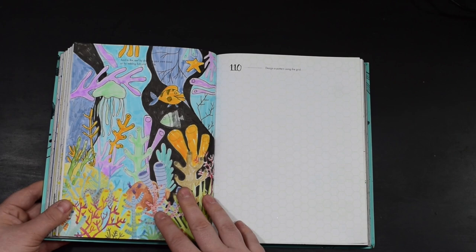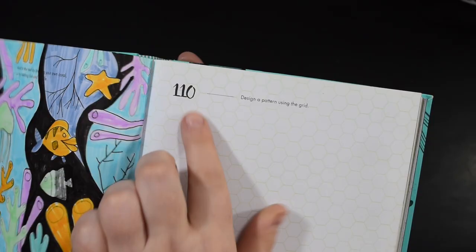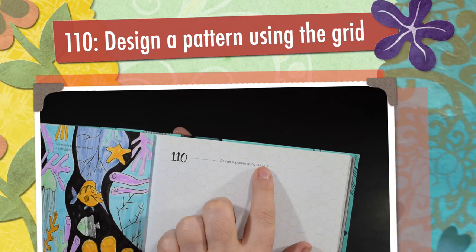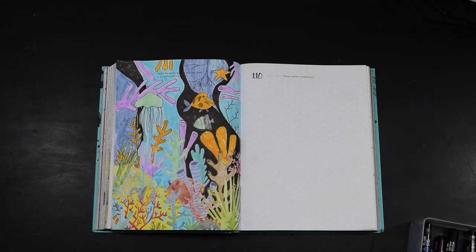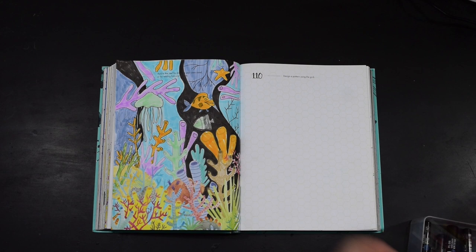Okay, so now we're going on to prompt 110: design a pattern using the grid. Now this is exactly the same as one of the previous videos that we did and we did a bumblebee. This time I want to do something completely different and I've been having a little flick through Google looking at different hexagonal designs and I came across one that had loads of golds and navy blues, so I thought yeah, I'm definitely going to do that today.